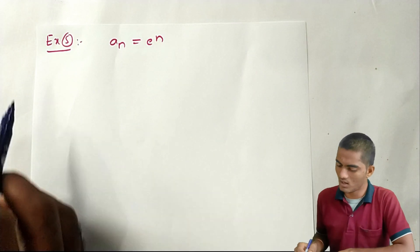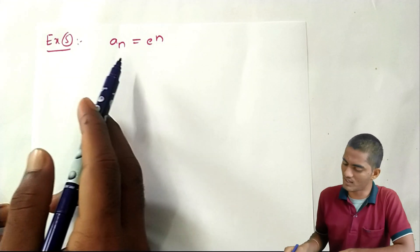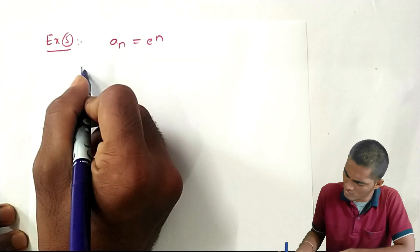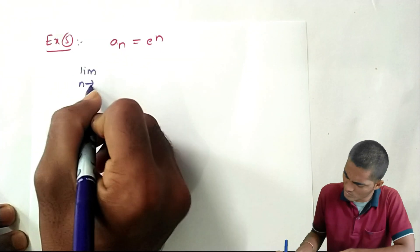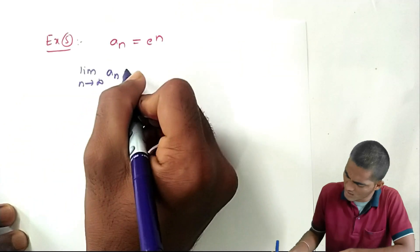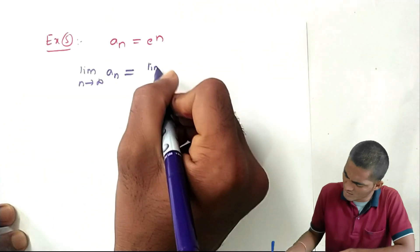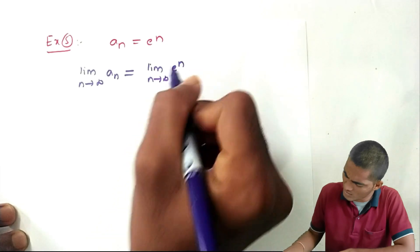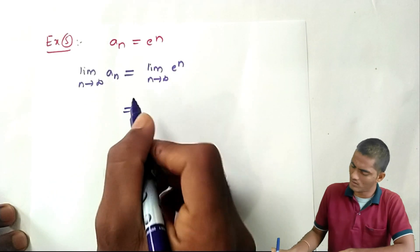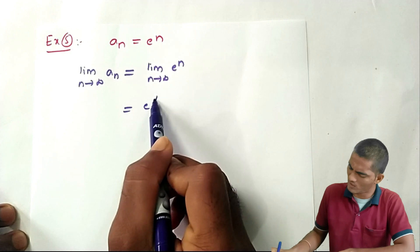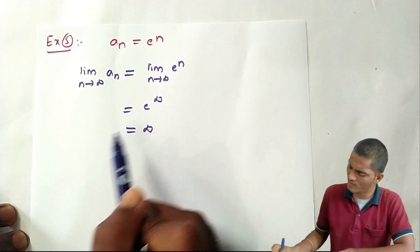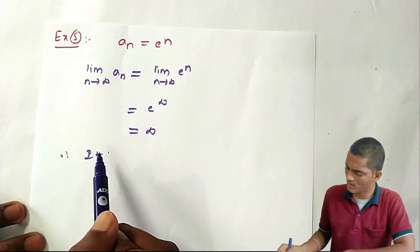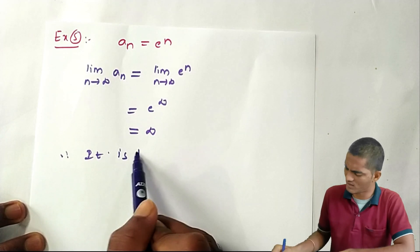Next example: the nth term of the sequence is a_n = e^n. Applying the limit: limit as n tends to infinity of e^n. Since e^∞ = ∞, the given sequence is divergent.